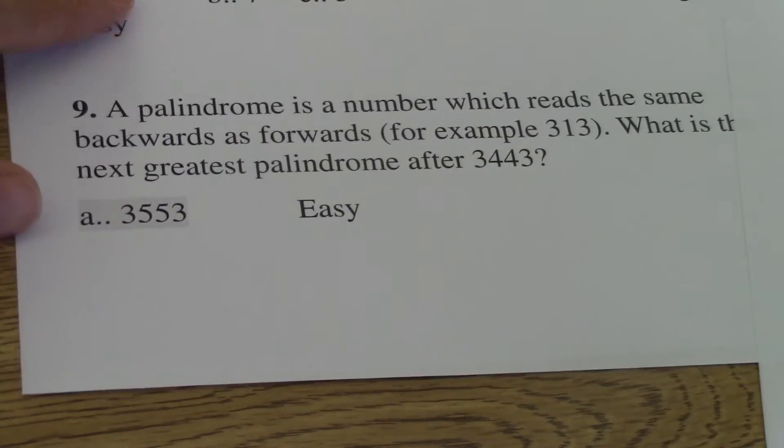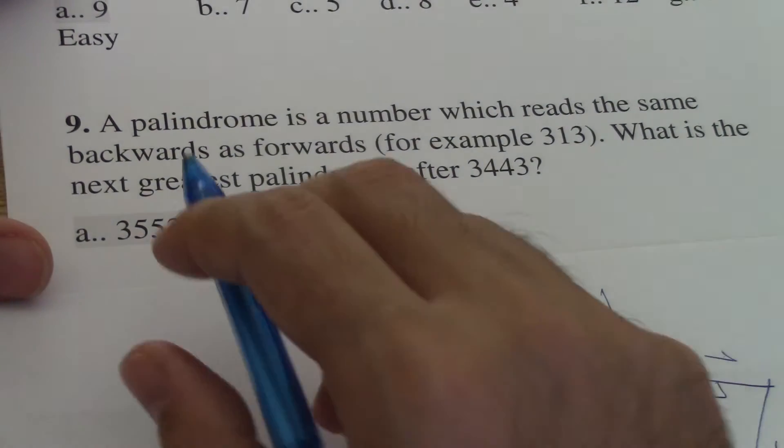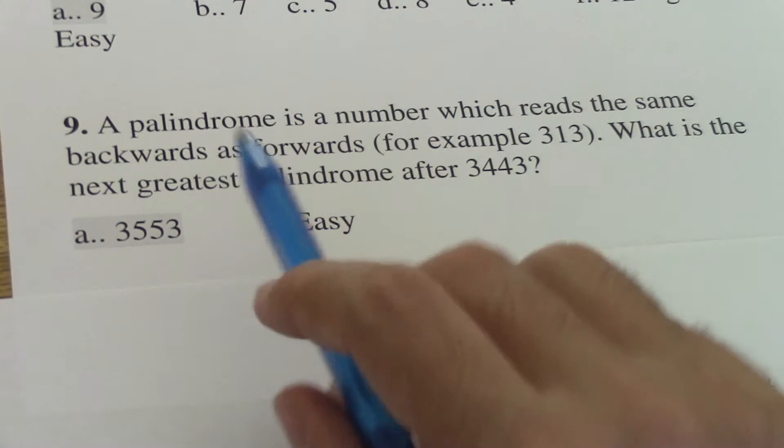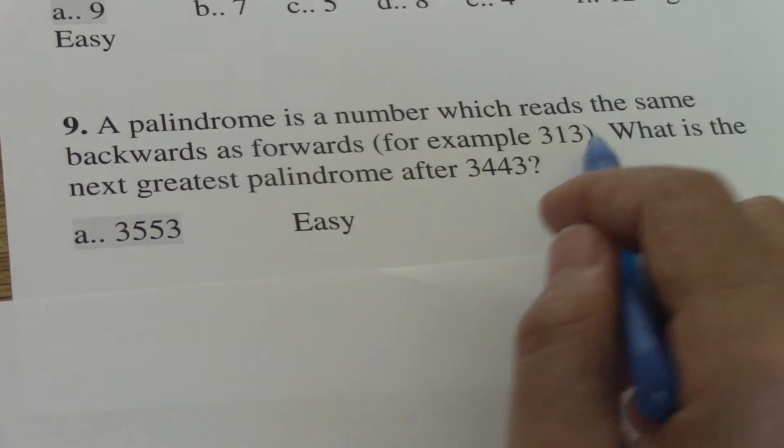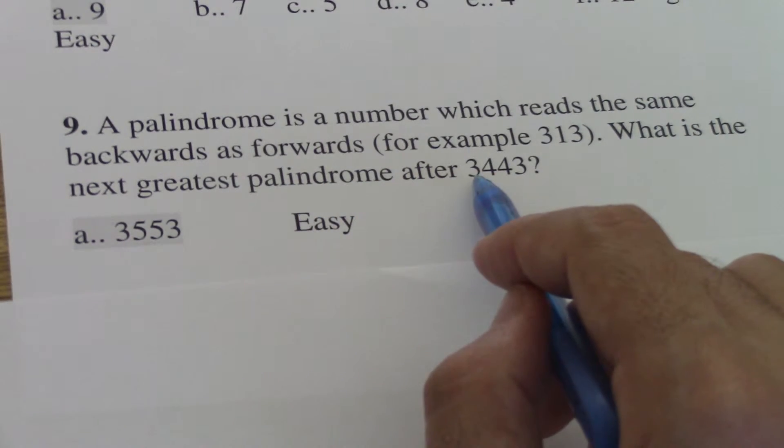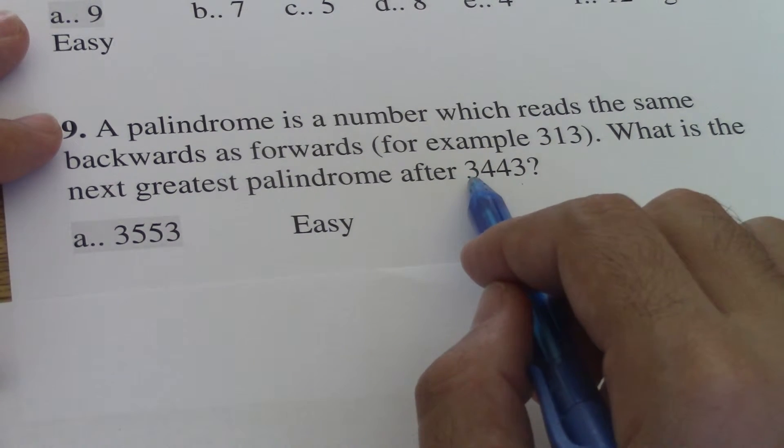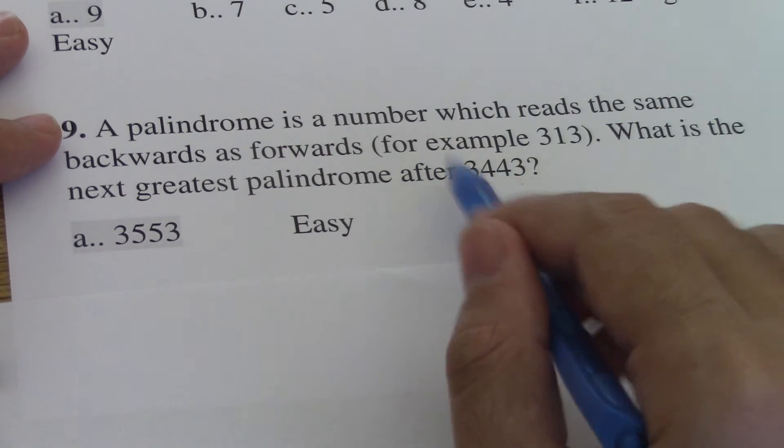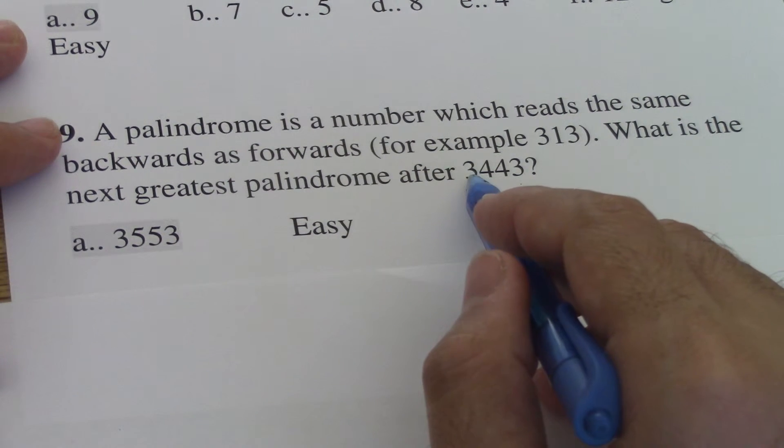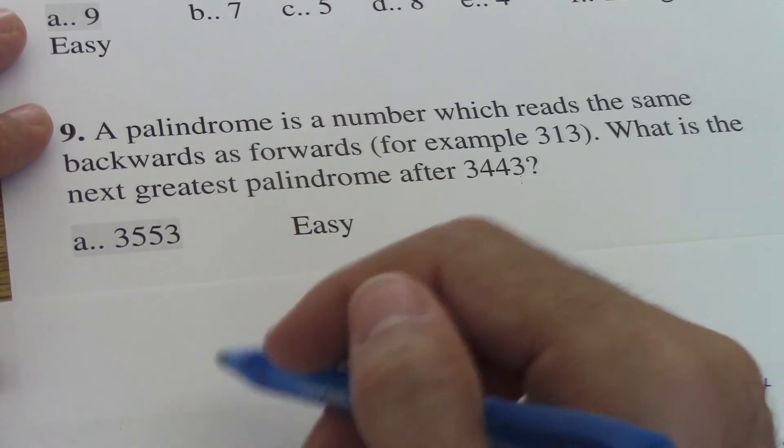Let's do this one. A palindrome, I think that's the right way to pronounce, I'm not sure. It's a number which reads the same backwards and forwards. For example, 313. If you read backwards, it's 313 too. So what is the next greatest palindrome after 3,443? So here, 4,444 is that number, but it's kind of too high. So the next one, the right next one is 3553. I think that's the closest number. So here's the answer. I think there is not too much to do.